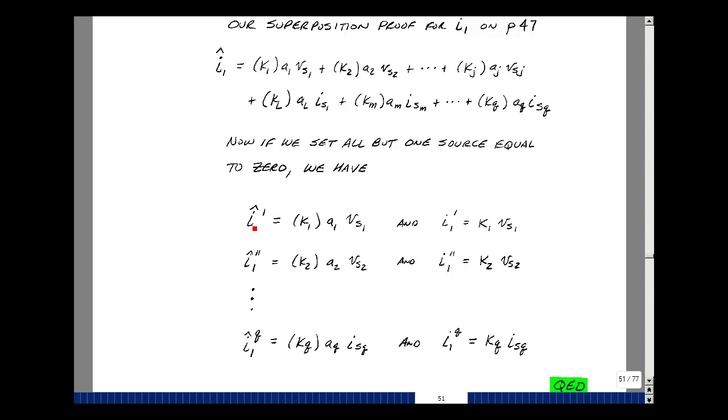Let's call this I1 hat prime, and that's due to the first source. These two terms here are the two terms we had for I1 due to the first source. So what we're seeing here is that the output that we're solving for is proportional to the input acting alone, and that's the proportionality factor here, A1. We can do that for the second source all the way through the last source. And that's what it means to be proportional.